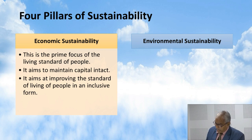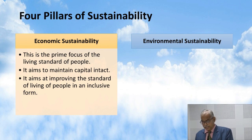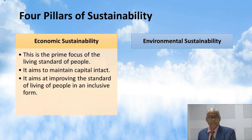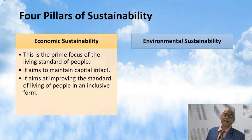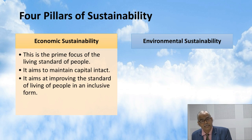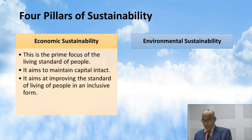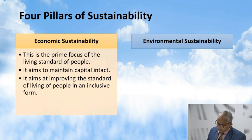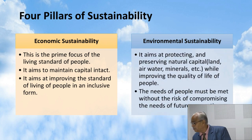The fourth pillar is environmental sustainability. It aims at protecting and preserving natural capital — land, air, water, minerals — while improving the quality of life for people. Economic sustainability is directly linked with environmental sustainability because it involves the exploitation of resources for better lives. The needs of people must be met without compromising the needs of future generations, which has been the motto of sustainable development as discussed over the last five decades.